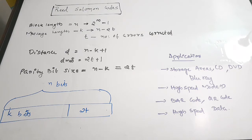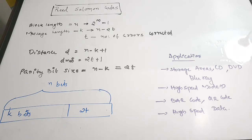Reed Solomon codes are a subclass of BCH codes. The latest video on ITC was on BCH codes, and Reed Solomon is a subclass of BCH codes. BCH codes are cyclic codes, so Reed Solomon codes also come under the cyclic codes classification.